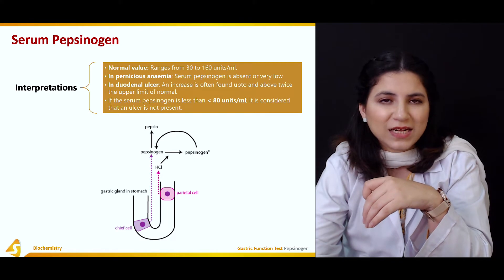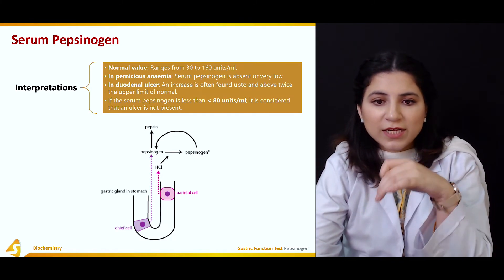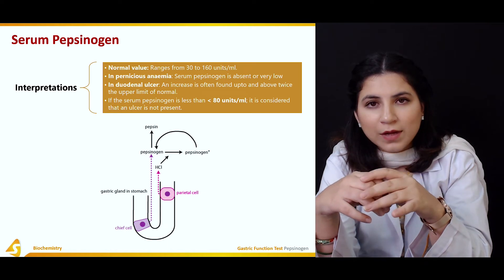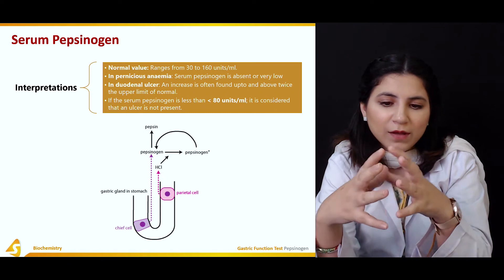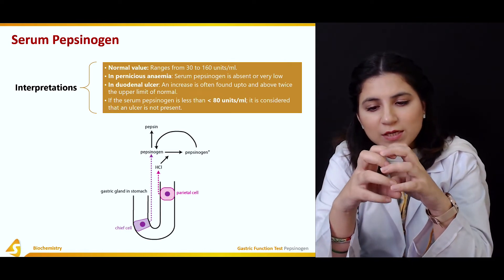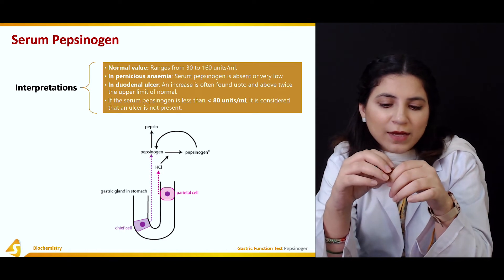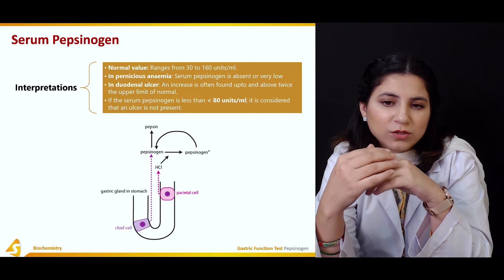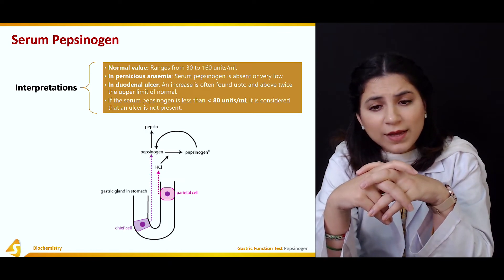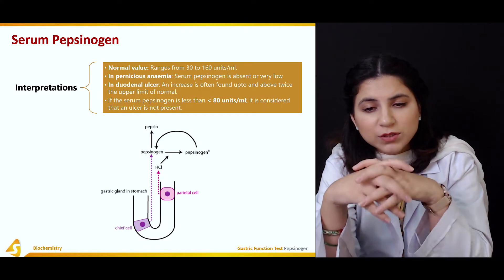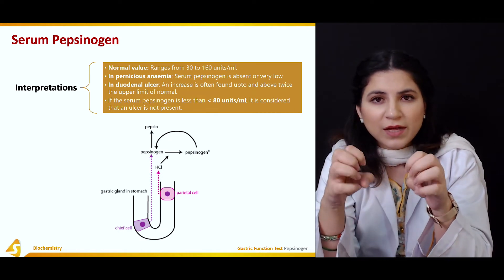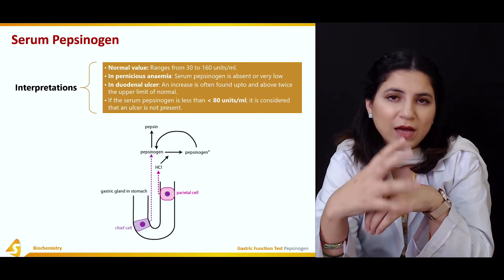If serum pepsinogen is less than 80 units per mL, it is considered that an ulcer is not present. However, if it reaches up to 80 units per mL, the chance of ulcer is there. If it increases from 80 up to 300 or 320 units per mL, the chance of a duodenal ulcer is increased. Pepsinogen helps us determine if a person is suffering from any of these problems.